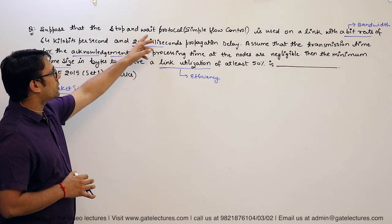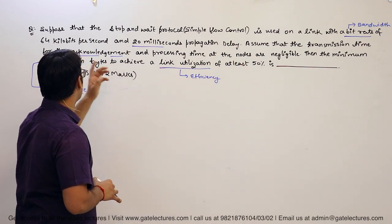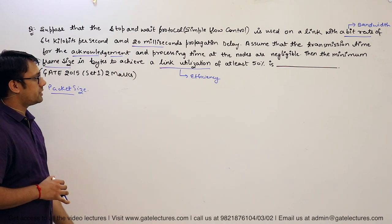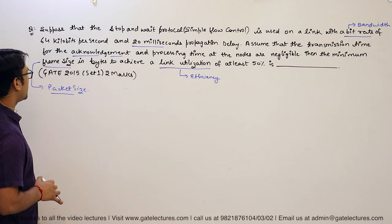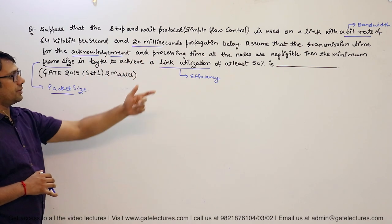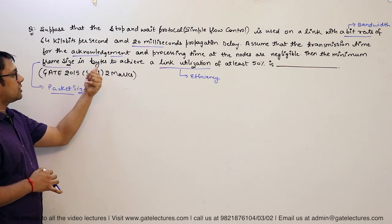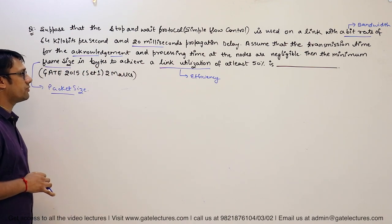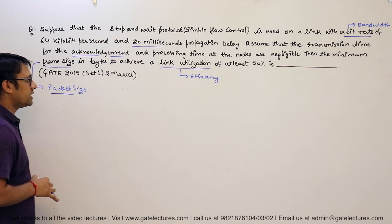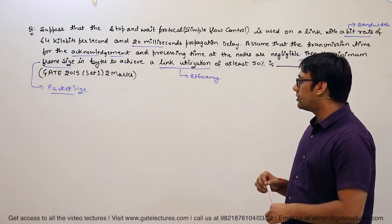The question says: suppose the stop-and-wait protocol is used on a link with a bit rate of 64 kbps and 20 milliseconds propagation delay. Assume that the transmission time for the acknowledgement and the processing time at the nodes are negligible. What is the minimum frame size in bytes to achieve a link utilization of at least 50%?